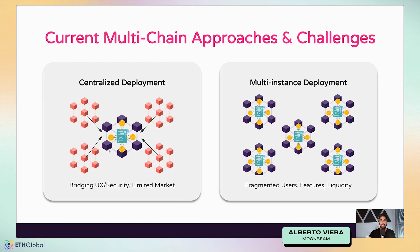With multi-instance deployments like SushiSwap, when you visit the interface and select a chain, it only interacts with that one specific chain — there's no real multi-chain deployment, just fragmented deployments on multiple chains. This creates a very fragmented user base, fragmented features, and fragmented liquidity. For example, Moonbeam can provide assets from Polkadot but Ethereum deployments don't have those features, so you're fragmenting features as well.